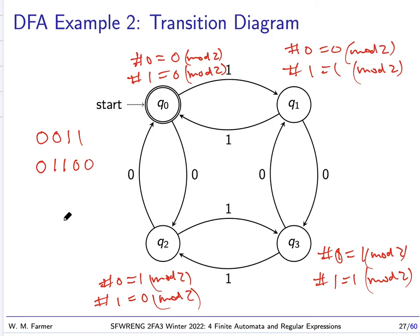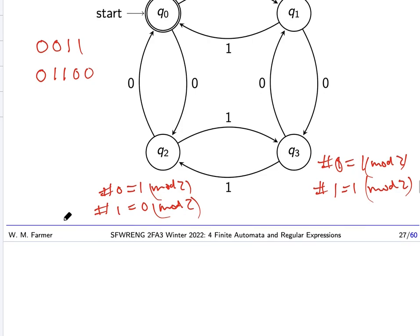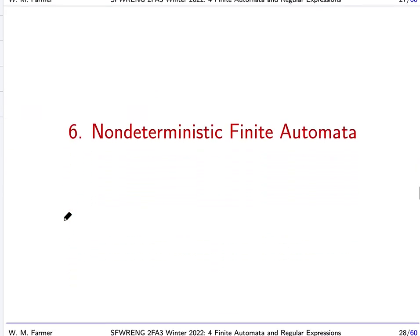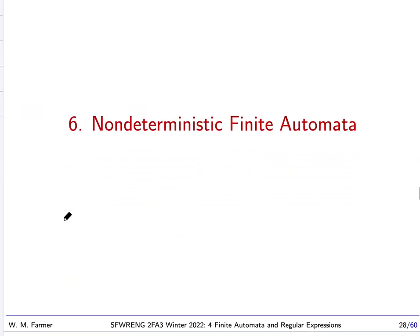Next time we're going to look at a different kind of finite automaton: non-deterministic finite automata (NFA). These are much easier to construct than deterministic finite automata. We'll stop here, and next time we'll be looking at NFAs.